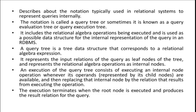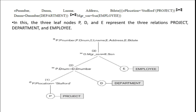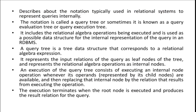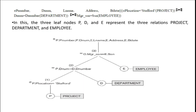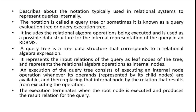The query tree represents the input relations of the query as leaf nodes of the tree, and represents the relational algebra operations as internal nodes. Internal nodes are mainly represented for operations such as join and select. Leaf nodes represent the input relations — for example, inputs from the employee table, department table, and project table.